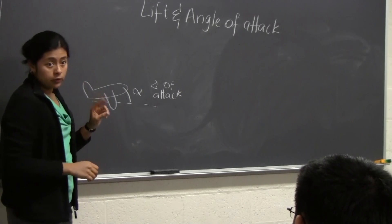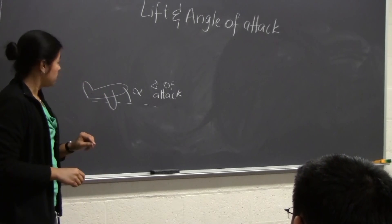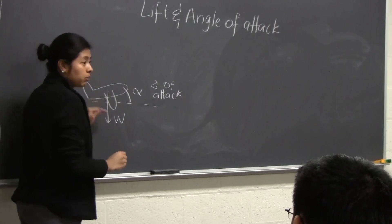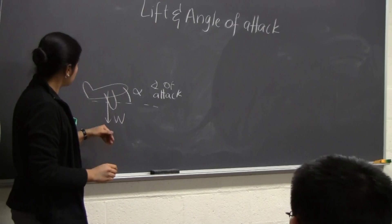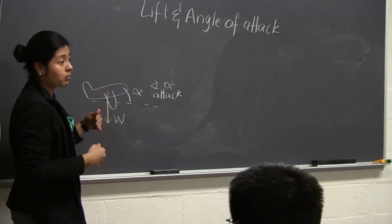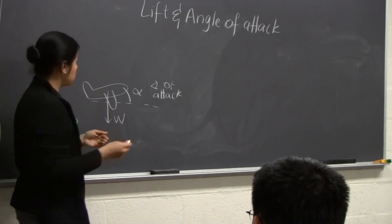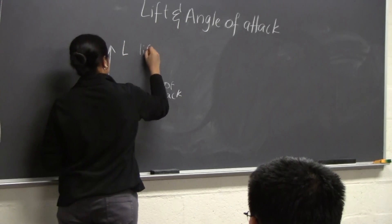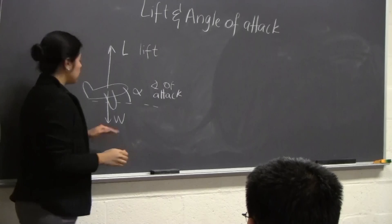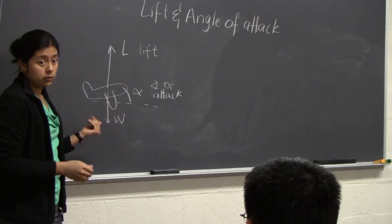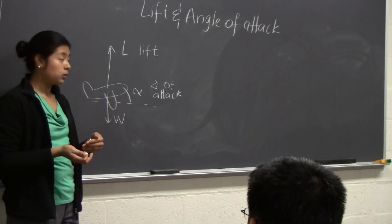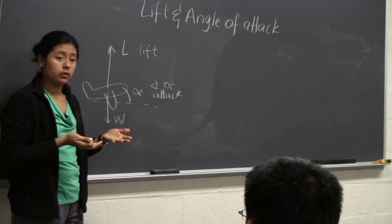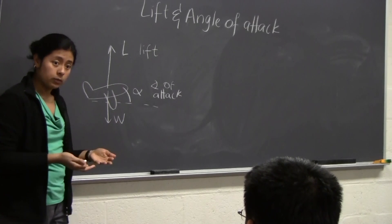Now, there are two forces acting on the plane. You're going to have gravity — the weight of the plane — pulling it down. And you're also going to have a force upwards that's keeping the plane afloat. That force is called lift, which we're going to denote by L. Lift is generated as air brushes through the wings. The wings are designed in such a way that as air goes through them, they generate a force upwards — that's what keeps the plane afloat.